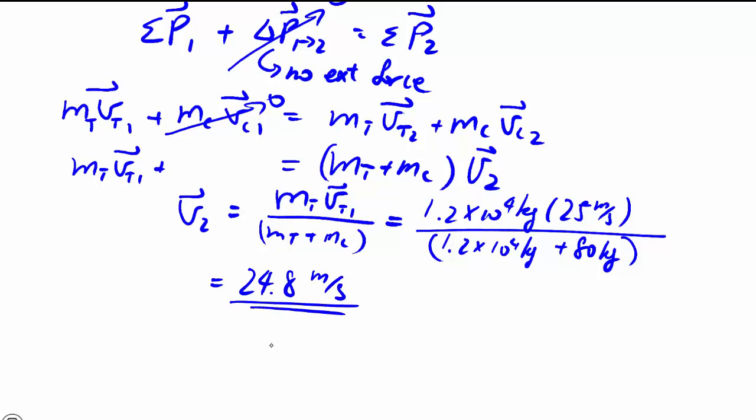So the truck slows down just a little bit because the garbage can is way lighter than the truck is. And it still goes in the same direction. So we're going to call it positive. So there's an example of a completely inelastic collision where things get stuck together.